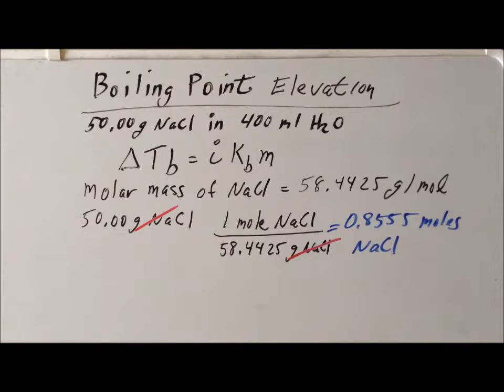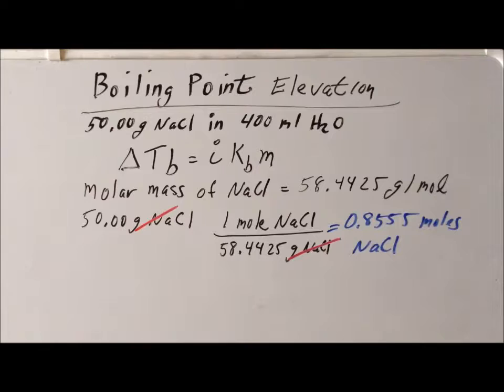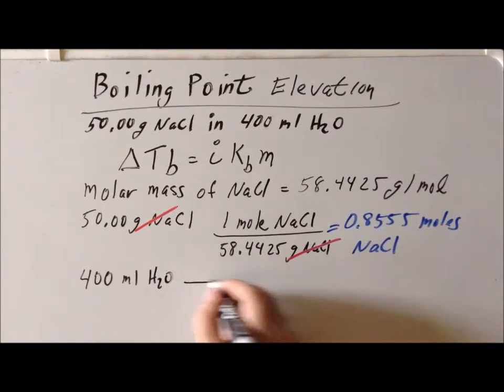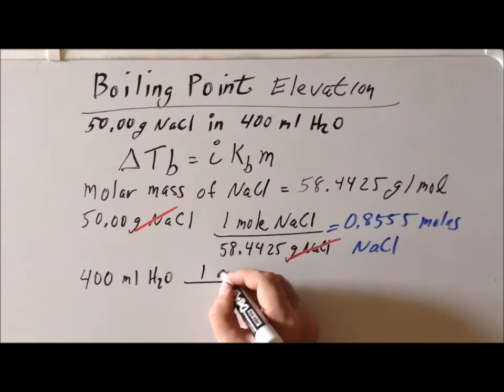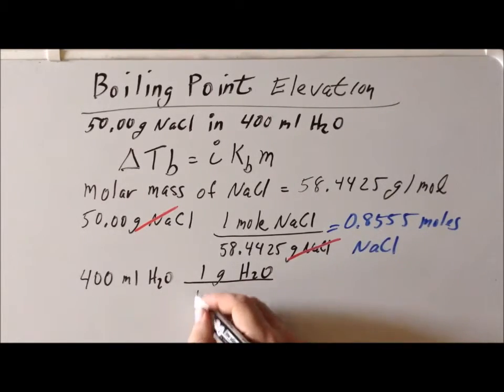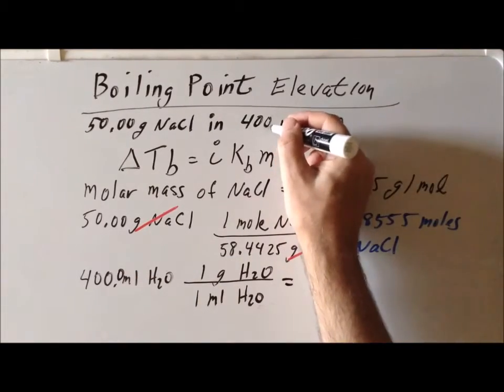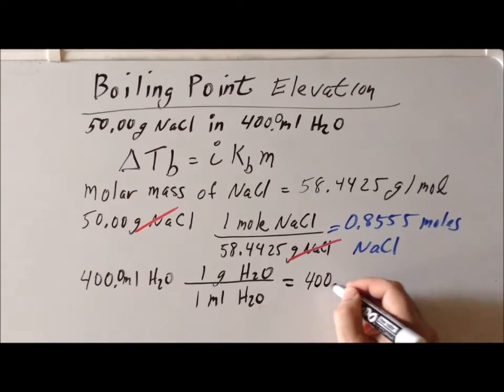Now, the second part of the problem for computing the molality: we need to know the mass of the solvent, and we're only told the volume of the solvent. This is an extremely common pattern in this type of problem, and it depends upon remembering a very important fact about water: that it has a density around 25 degrees Celsius of almost exactly one gram per milliliter.